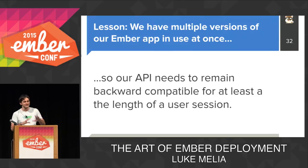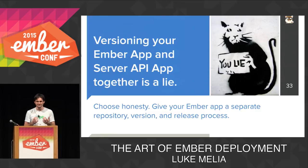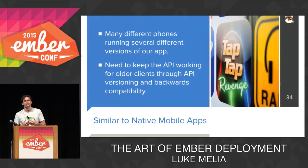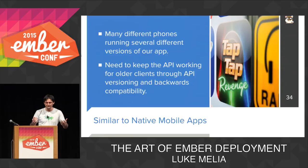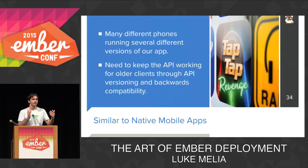The idea of versioning your Ember app and your server API together as a single version number with a single release process is a lie. We can embrace this fact, choose honesty, and give our Ember app a separate repository, a separate versioning scheme, and a separate release process. We can learn lessons here from the native app ecosystem, where it's taken for granted that you'll have multiple versions of a native app talking to your API, and you need to keep your API working for those older clients for some period of time.